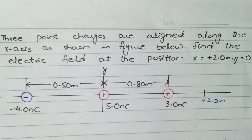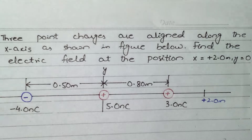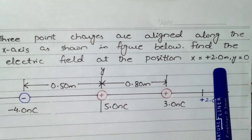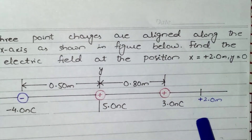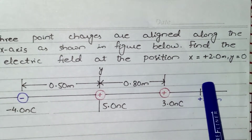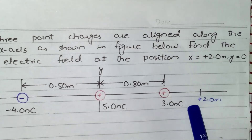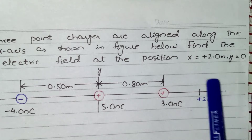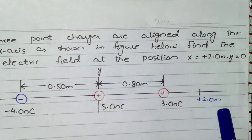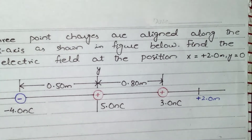The question for today's video: three point charges are aligned along the x-axis as shown in the figure. Find the electric field at the position x equals 2.0 meters and y equals zero. This is the point where we need to find the electric field — x equals 2 and y equals zero.